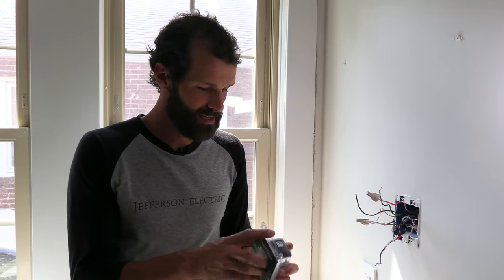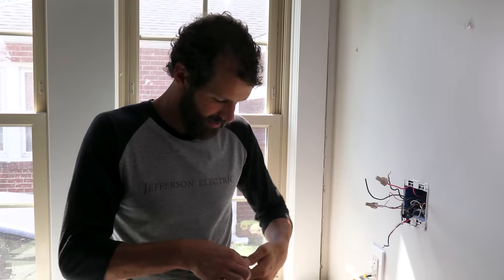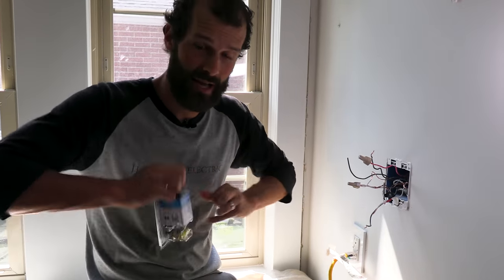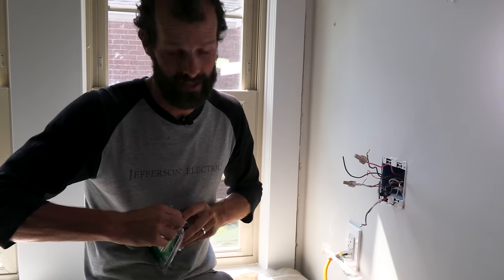This is a Diva dimmer. Customer wanted Decora style. It's LED compatible. Should have a nice smooth dim with the overhead LED lights. That's definitely not a given. LEDs are finicky.